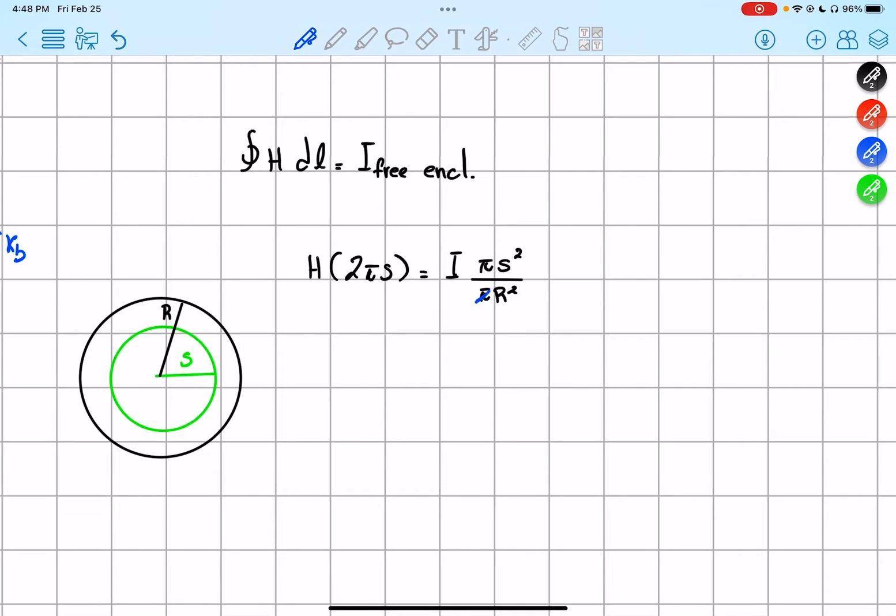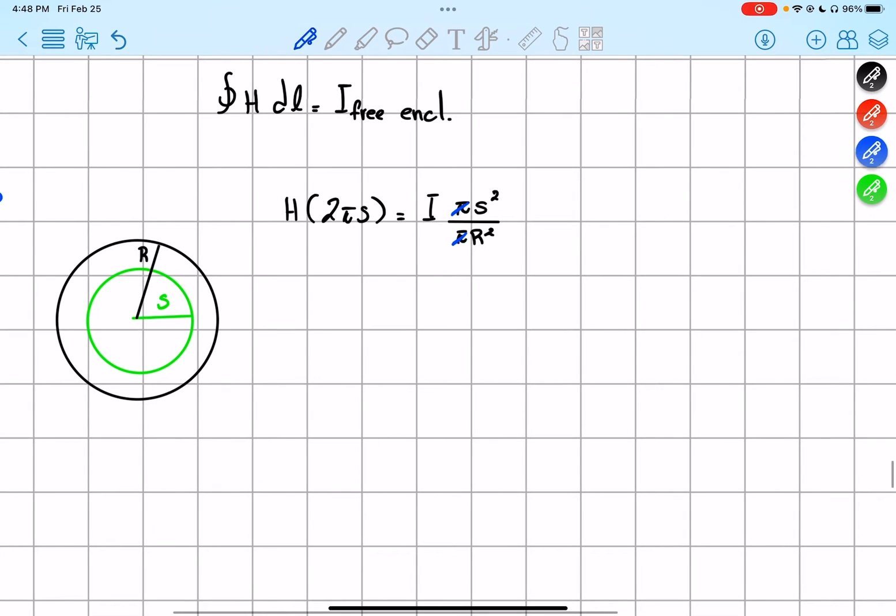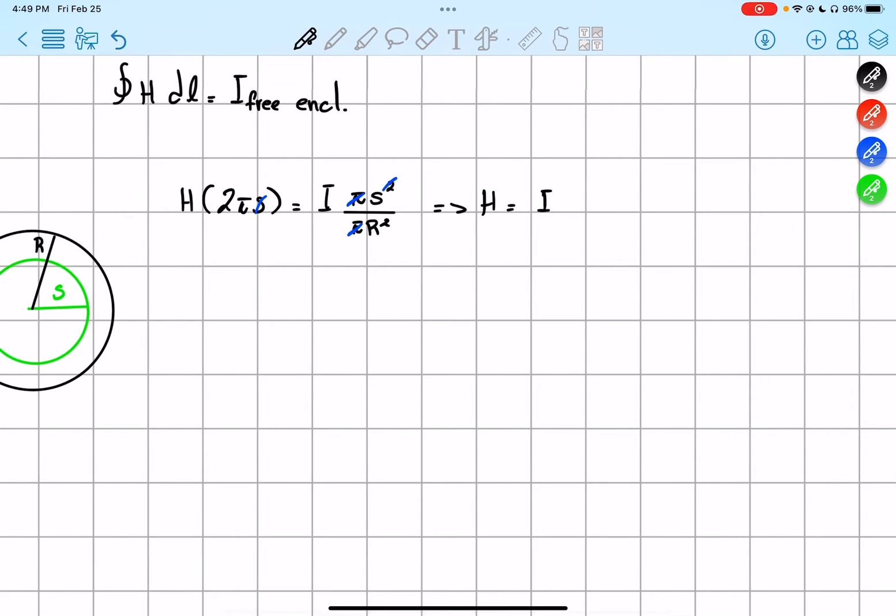Okay, so now we can solve the π over here and we can solve the s on this side, and we get that h is equals to i times s over 2π r squared. Now, this is in the case where we have, also it's pointing along the φ hat direction. So this is the case where s is less or equals to r, so we're inside the wire.